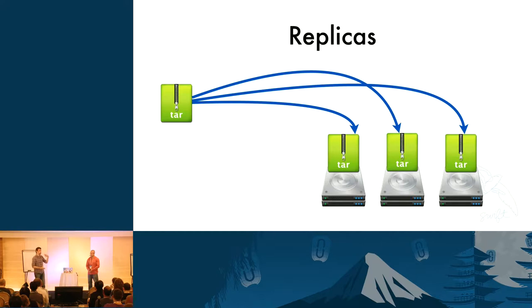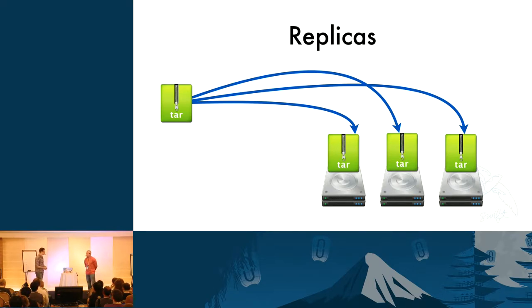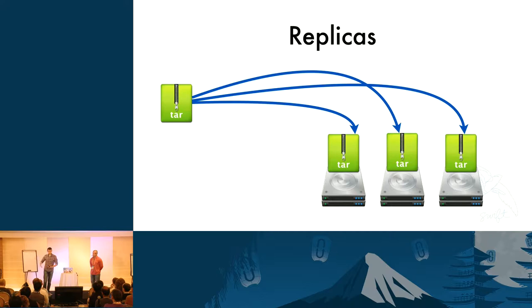Replicas are a really good way to achieve durability. They're simple and work for a lot of use cases. But the cost is that if you're storing one gigabyte in, you've got to store three gigabytes inside the cluster. People have always asked how to make that better, and the answer is: how much is your data worth? If you need to store it multiple times, you do. But there could be a better way to still get high durability while storing less data.